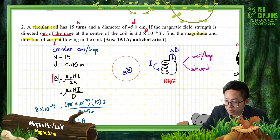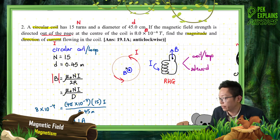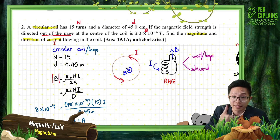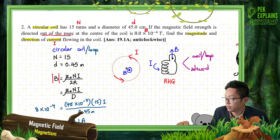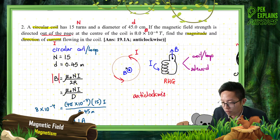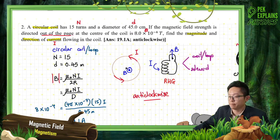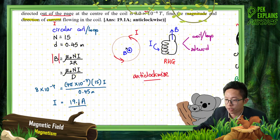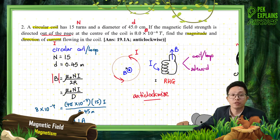So the final answer: the current magnitude is 19.1 A and the direction is anticlockwise. Using the right-hand grip rule — remember, only the right hand — with the thumb as the magnetic field pointing out of the page, the fingers give an anticlockwise current direction. That's the complete answer: magnitude and direction.